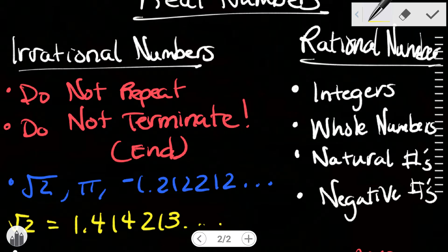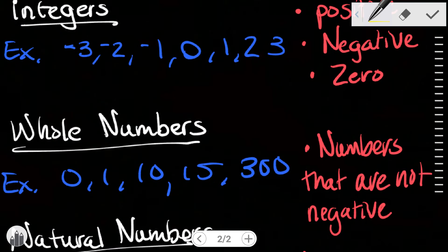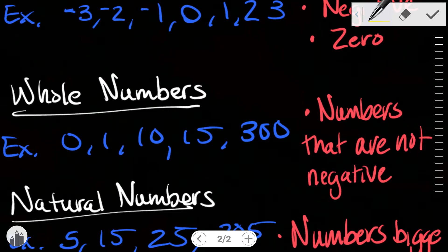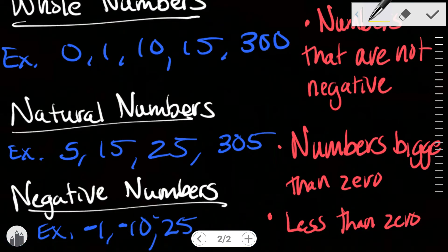A rational number breaks down into integers, whole numbers, natural numbers, and negative numbers. Integers can be negative, positive, or zero. Whole numbers are zero and bigger. Natural numbers are anything larger than zero. Negative numbers are less than zero. If this video helped you, be sure to like and subscribe — I'll be back in the next one, peace.